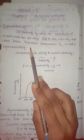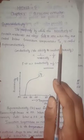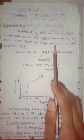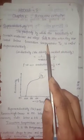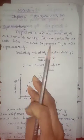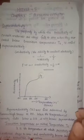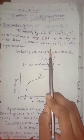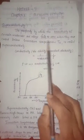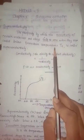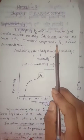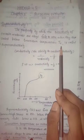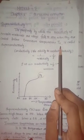That temperature is known as Transition Temperature. There is a limiting value of temperature below which superconductivity is observed. That limiting value is known as Transition Temperature, denoted by Tc, also called Critical Temperature.